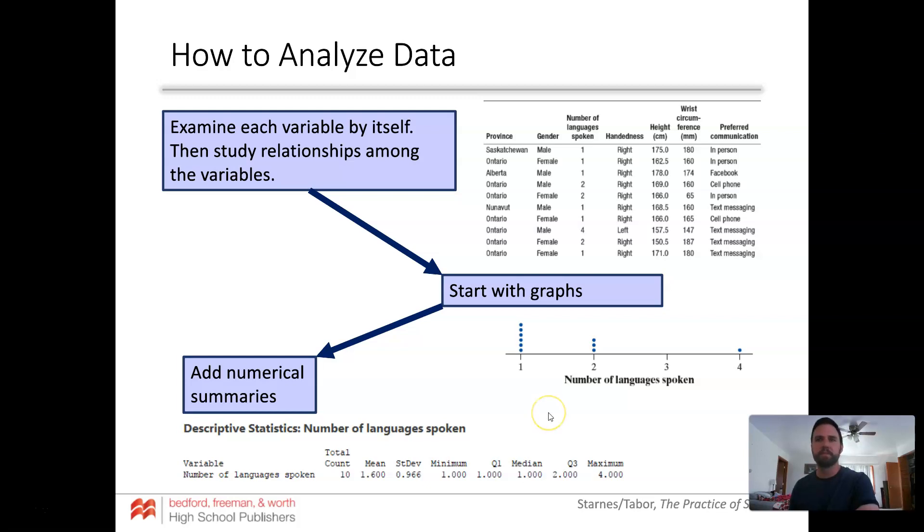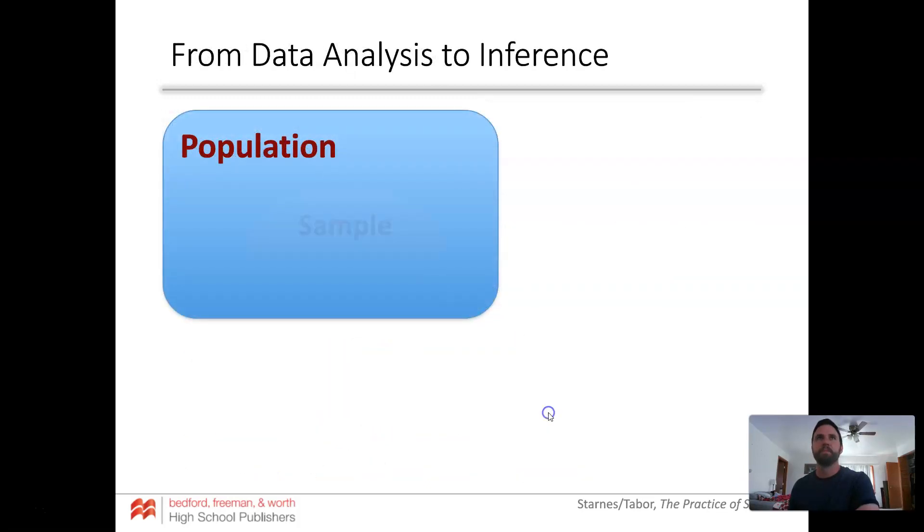Now what's a population? It's everyone. So the population of the world would be every person. But when we get data, we don't want to get information from everybody. That's either impossible or costs too many monies.